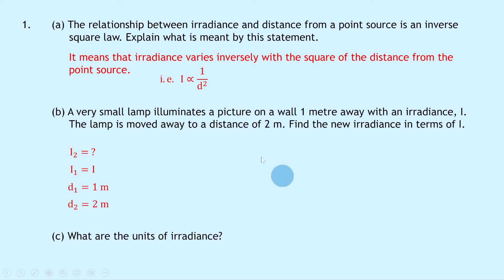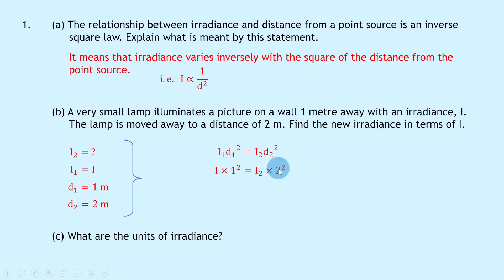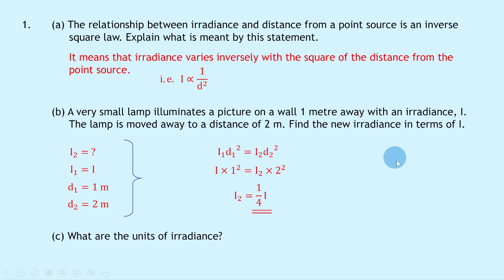Writing down the equation relating irradiance and distance from a point source: I₁d₁² = I₂d₂². Substituting in the numbers gives I × 1² = I₂ × 2², so I × 1 = 4 × I₂. Rearranging for I₂ gives I₂ = ¼I.